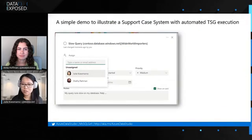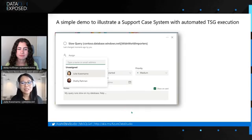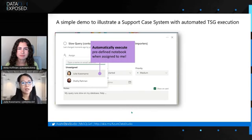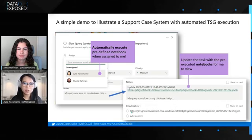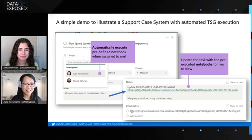Let me share my screen. Imagine you're an on-call DBA and you get tasks or issues or tickets like this — a slow query against a specific database. When it's assigned to you, it will automatically pre-execute the diagnostic Notebook, so that when you look at the ticket, you only need to open up the pre-executed Notebook and review the outcome instead of manually doing the execution. Wouldn't that be nice?